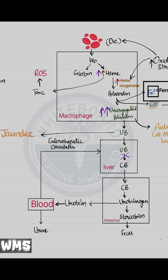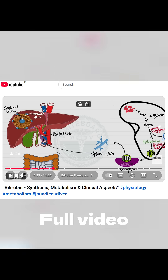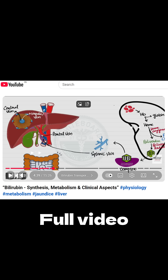So while heme oxygenase upregulation starts as a protective response, in severe illness it can become pathological, leading to jaundice and iron toxicity.